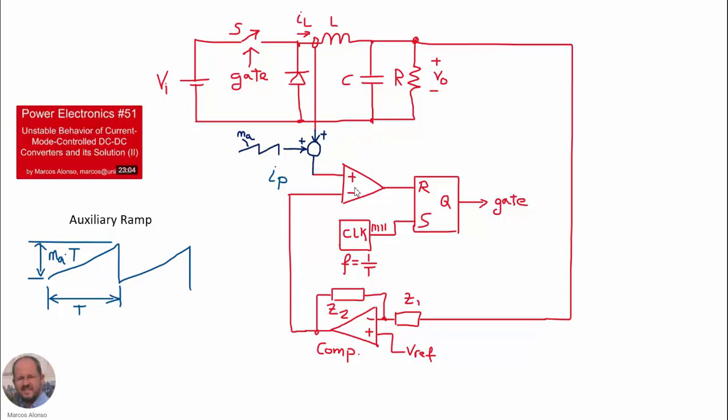We have the reference of the peak current, IP, that we inject into the inverting input of the comparator. We have the flip-flop, and we have a clock at the switching frequency.